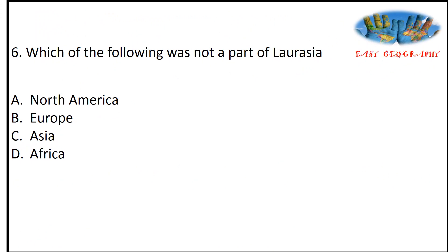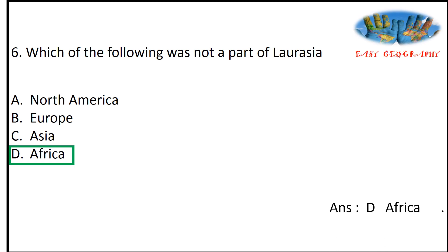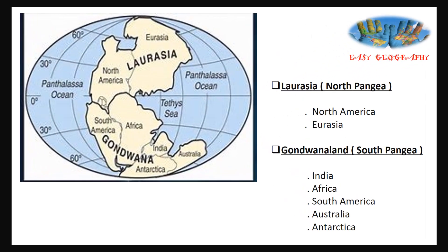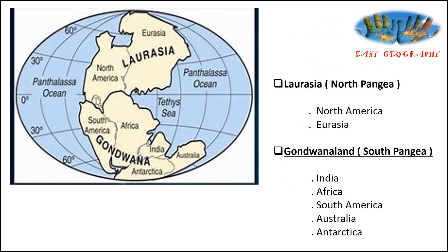Which of the following was not a part of Laurasia? Options: North America, Europe, Asia, Africa. According to Wegener, Pangaea split into two — Laurasia in the north and Gondwana Land in the south. The answer is Africa. All others are in the northern hemisphere and part of Laurasia. Africa is part of Gondwana Land, which also includes India, South America, Australia, and Antarctica.